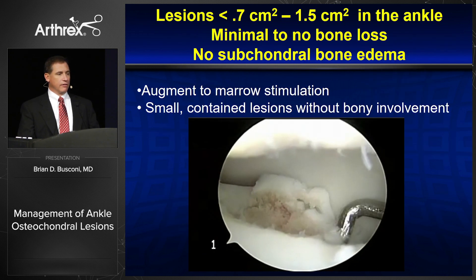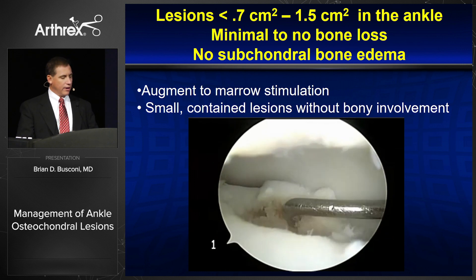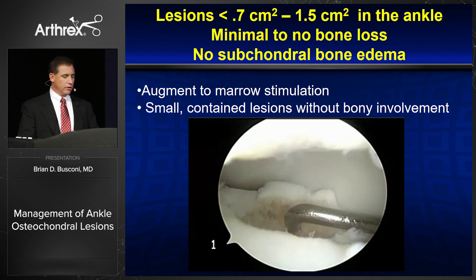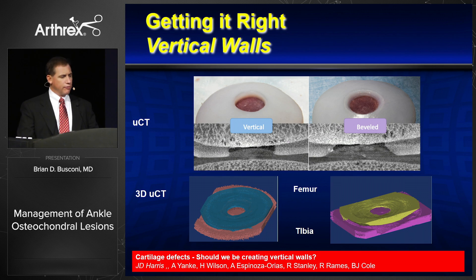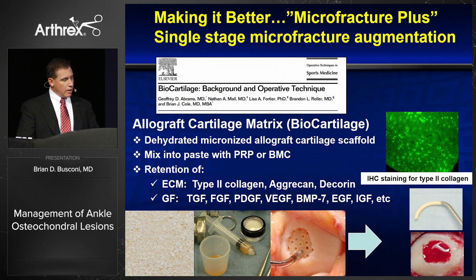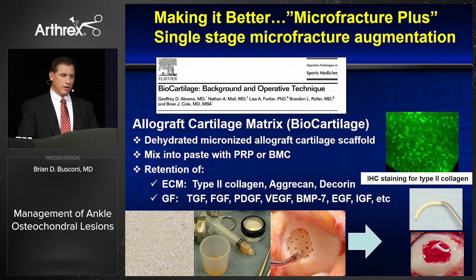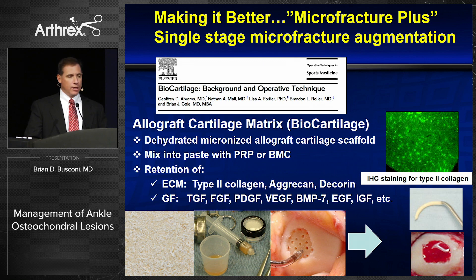For lesions 7 millimeters to 1.5 centimeters with minimal bone loss and no subchondral bone edema, I think it's important to proceed with microfracture, making sure we have good vertical walls as Brian Cole has shown us. We then consider how to make this microfracture better through single-stage microfracture augmentation. In my practice, I use biocartilage — an allograft cartilage matrix product — to which I add PRP or BMC. The importance of this is that it's single stage, easy to do, and very effective.